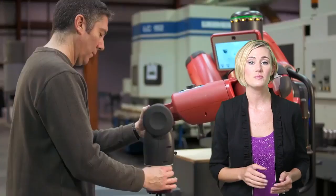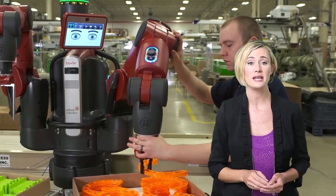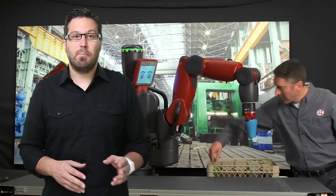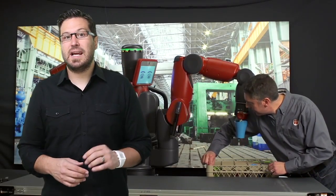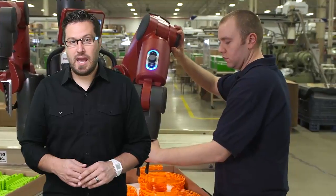What's even cooler is that Baxter's movements can also be programmed by directly manipulating its arms. Add to the fact that Baxter is armed with sensors to detect people, and you have a robot that doesn't need to be caged.